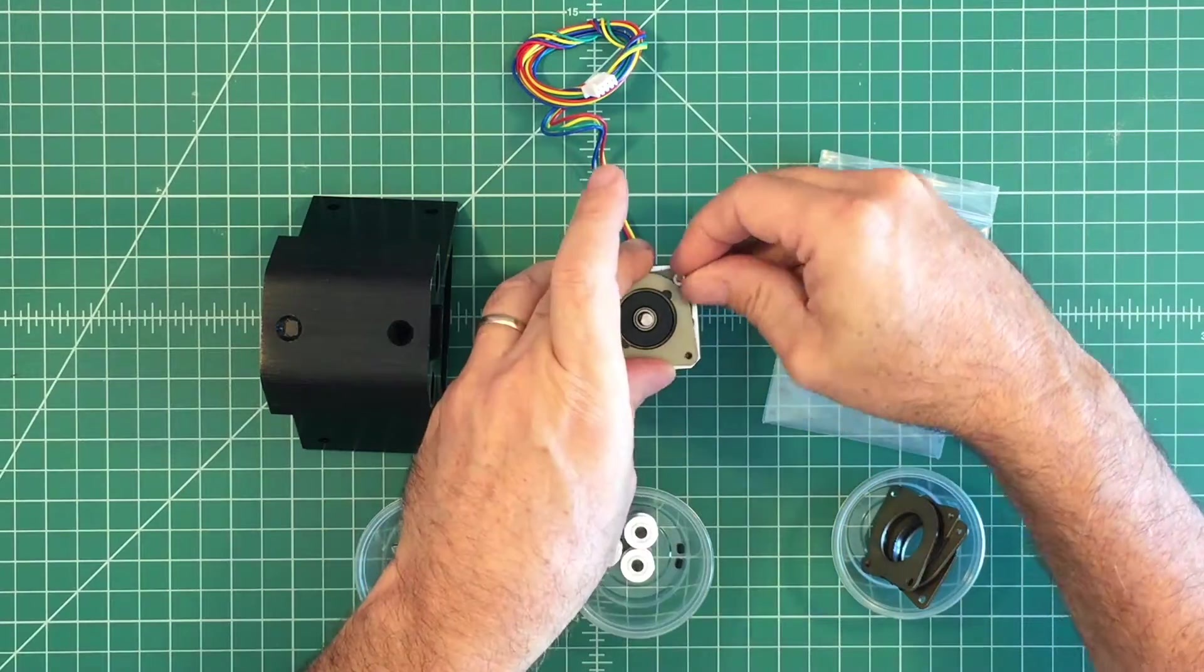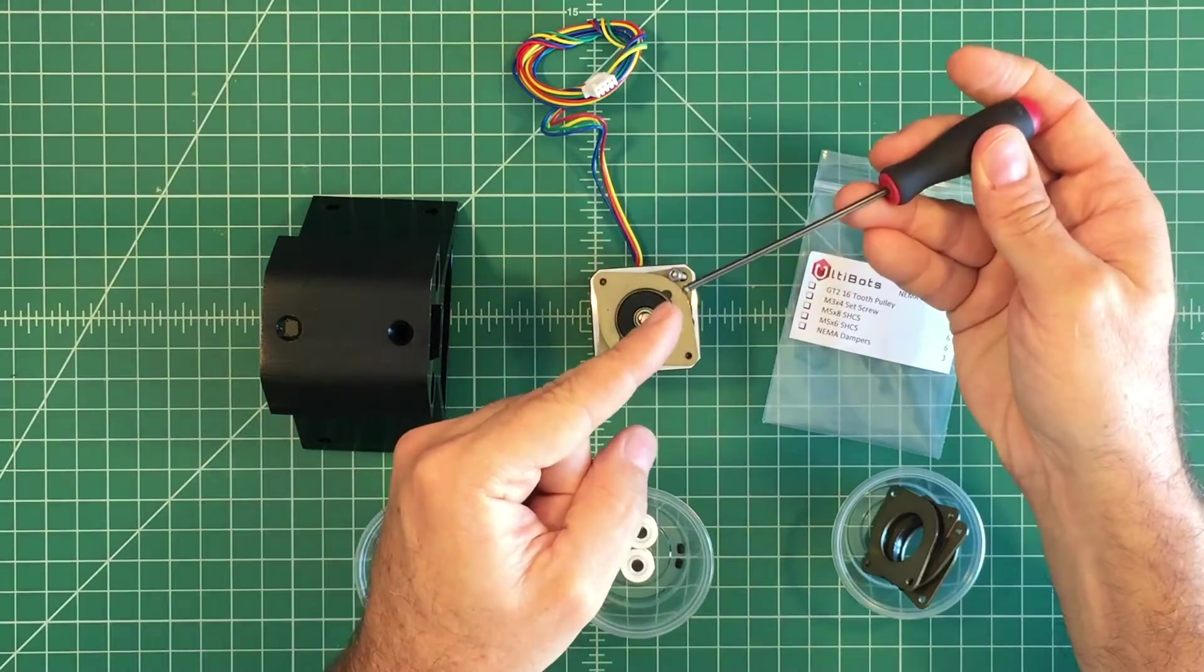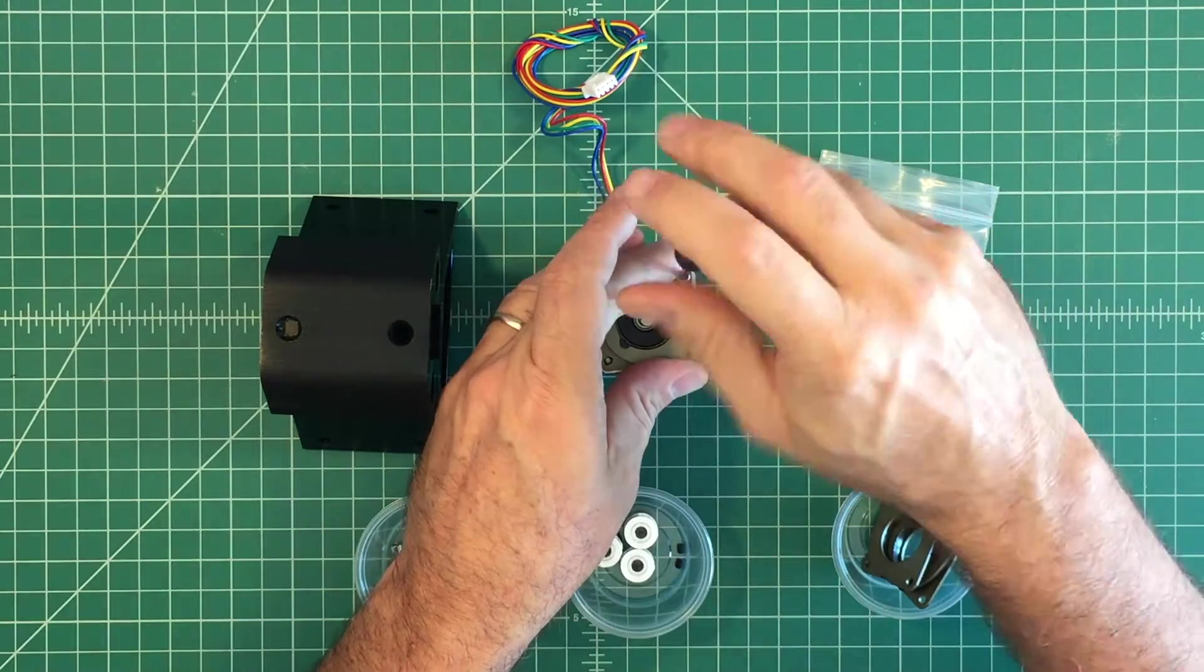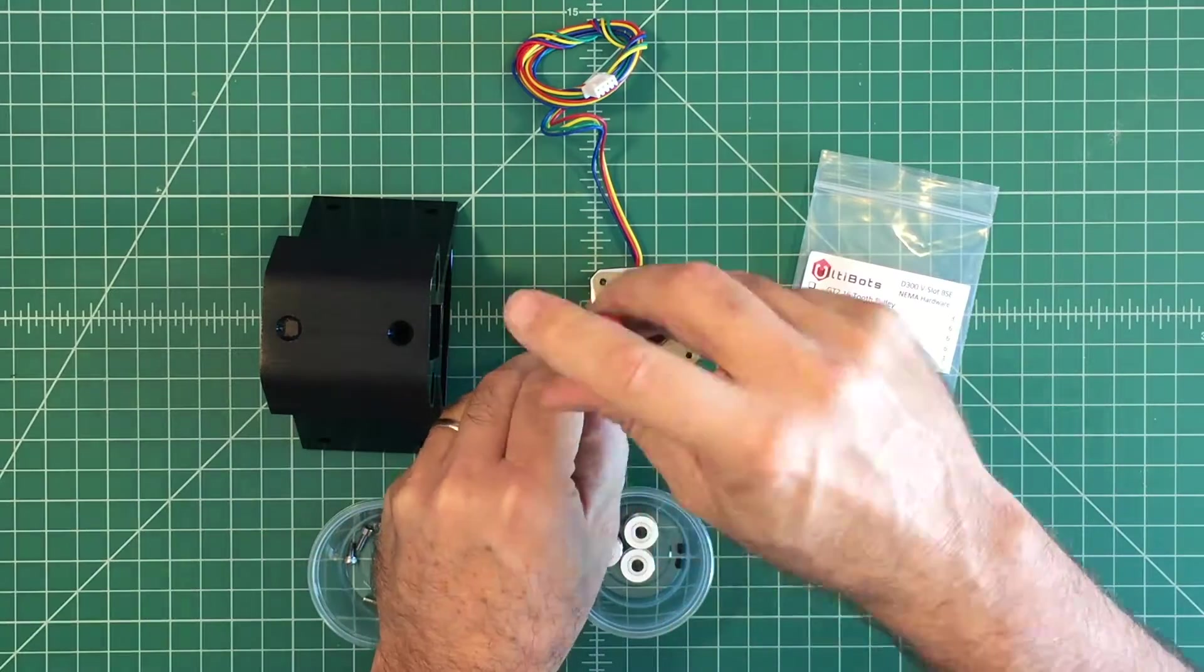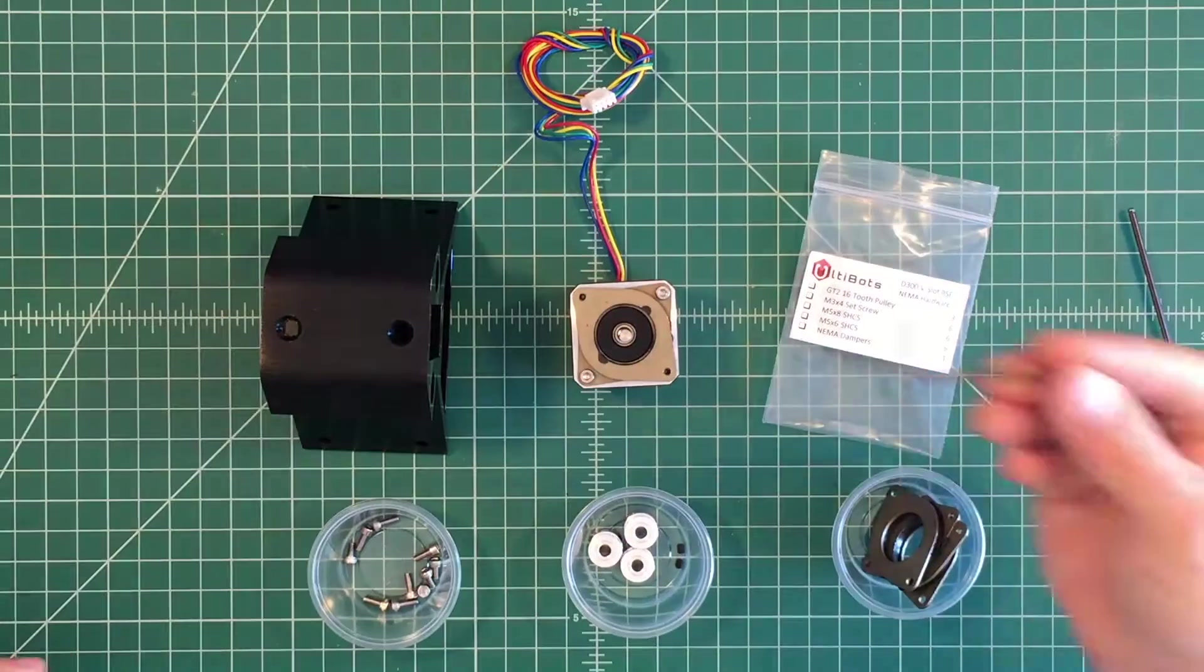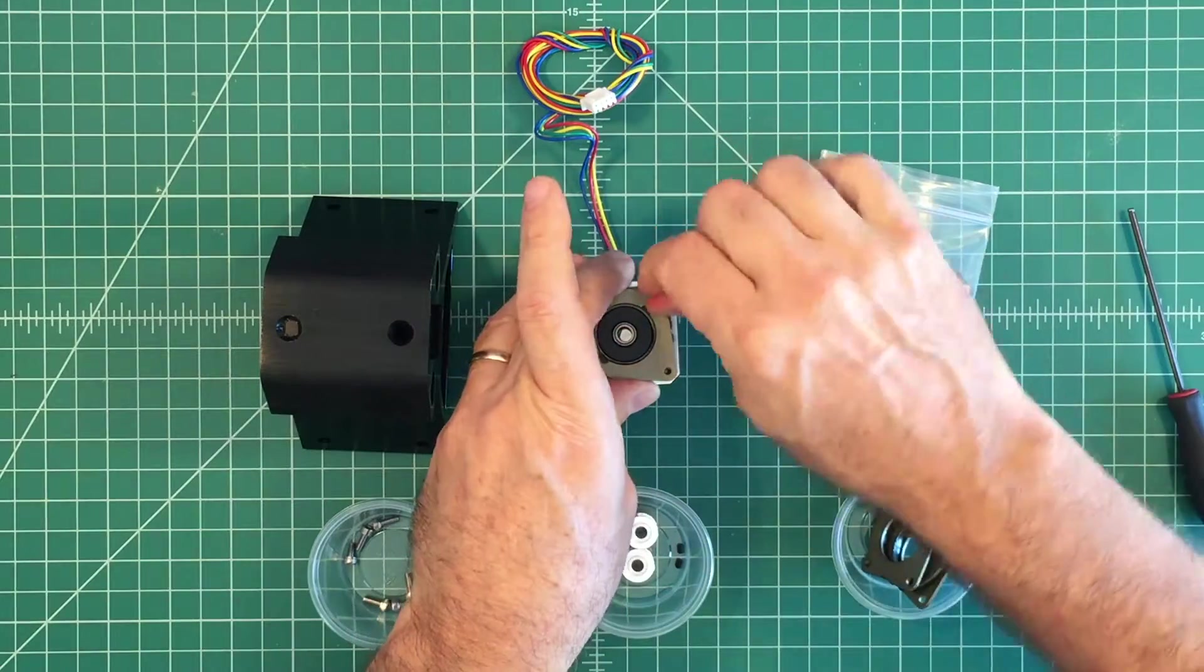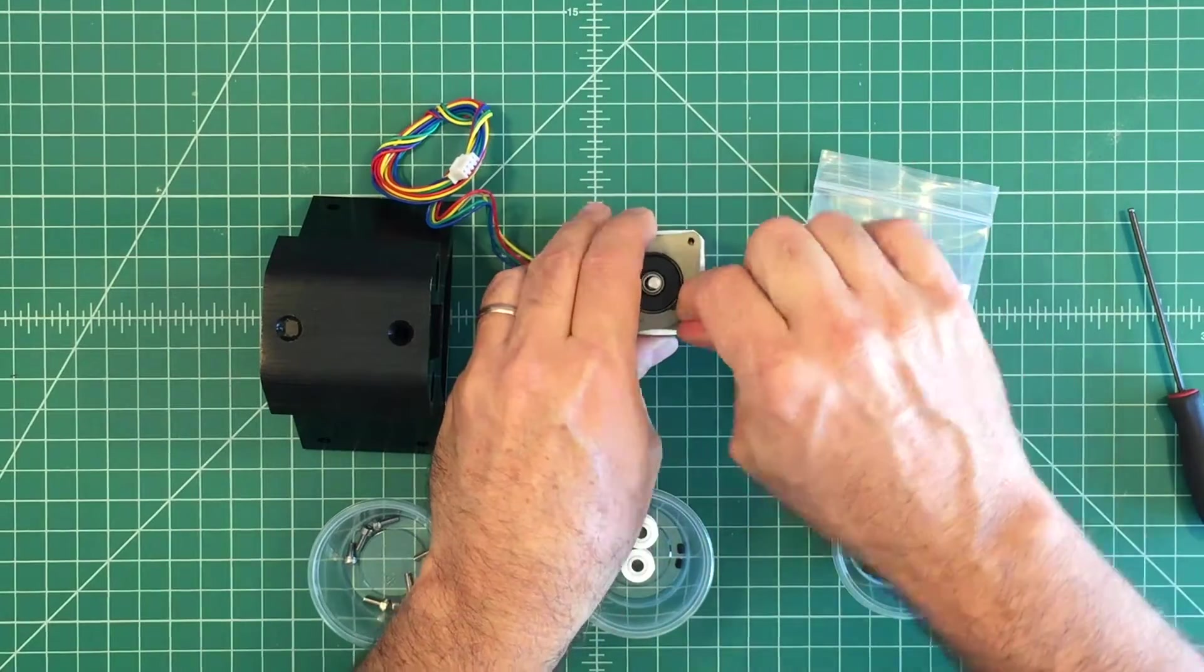Select two of the smaller M3 x 6 socketed cap screws and secure the NEMA damper to the motor as shown. Tighten each screw with a 2.5 metric L key.